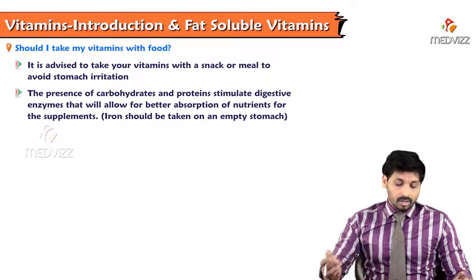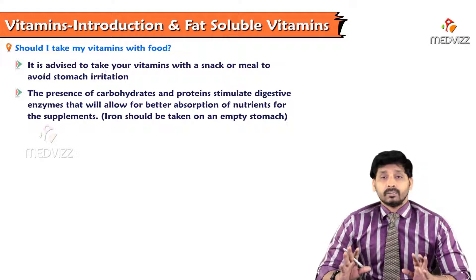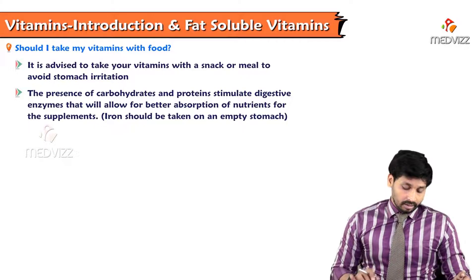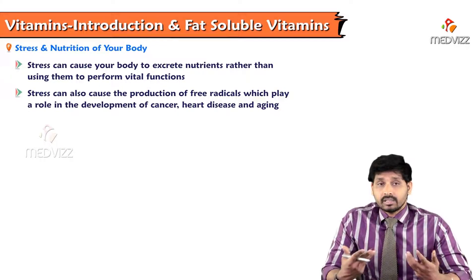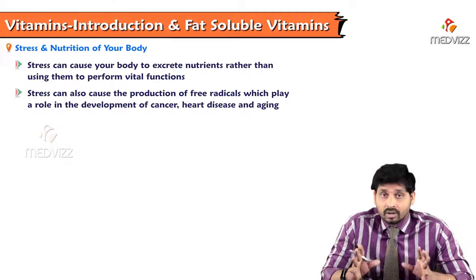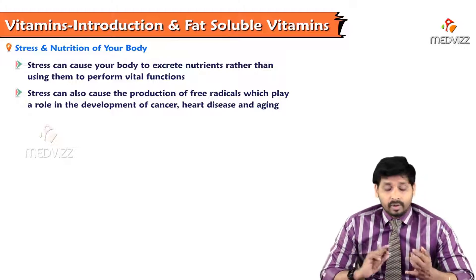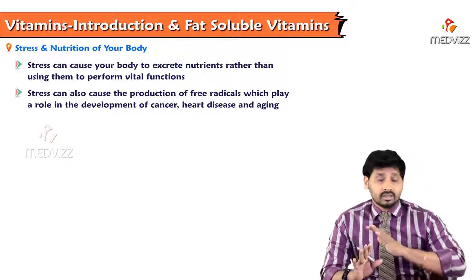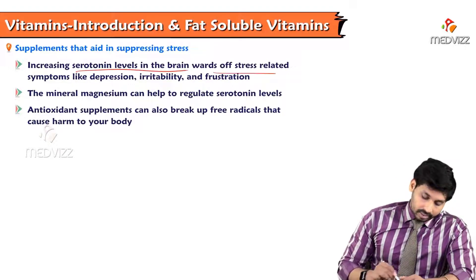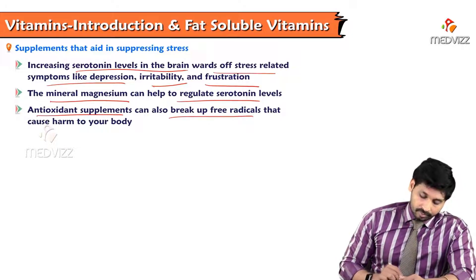You should take vitamins along with normal food for better metabolism and productivity. Stress causes production of free radicals, which play a role in development of cancer, heart diseases, and aging. Vitamins E, C, and beta-carotene can fight oxidative stress. These antioxidants also help with stress-related symptoms like depression, irritability, and frustration. Mineral magnesium can help regulate serotonin levels, and antioxidant supplements can break up free radicals that cause harm to the body.